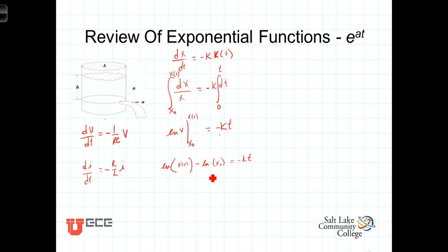Using the difference property of logarithms, we can combine these two, and we have then the natural log of x of t over x-naught is equal to negative k times t.